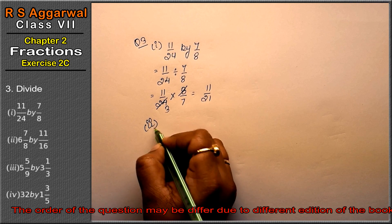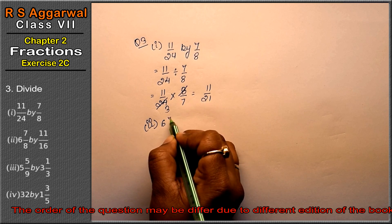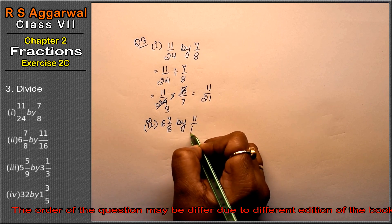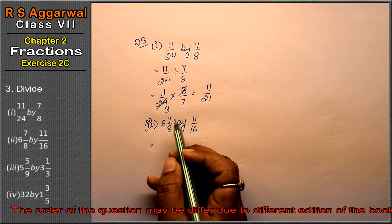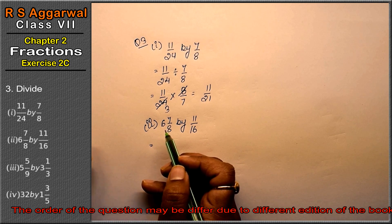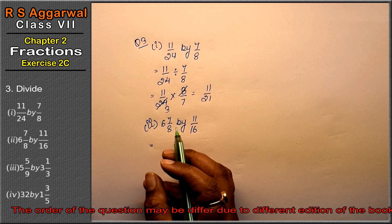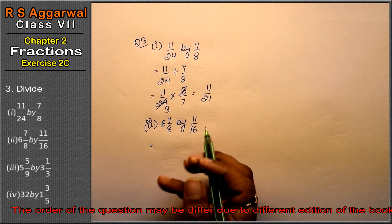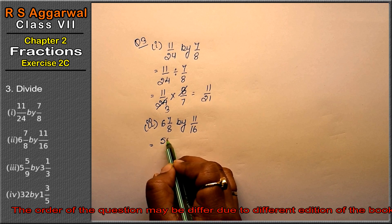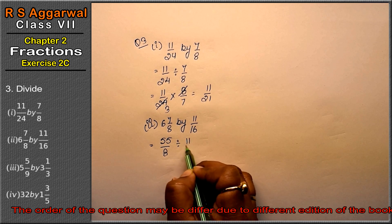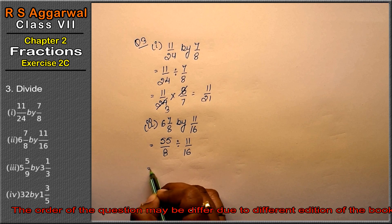Let's do second part. Second part is 6 whole 7/8 divided by 11/16. Friends, first of all we will change the mixed fraction. 6 times 8 is 48, 48 plus 7 is 55, so 55/8 divided by 11/16.